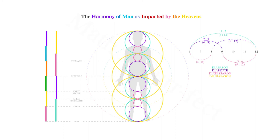Rising through another foot, or fifth, we come to the stomach, followed by a fourth to complete the octave from genitals to solar plexus. One diatessaron higher, we come to the neck, and then the final diapente at the top of the head.